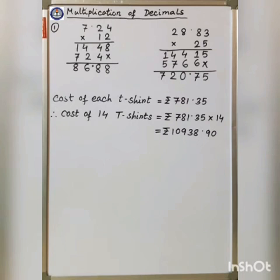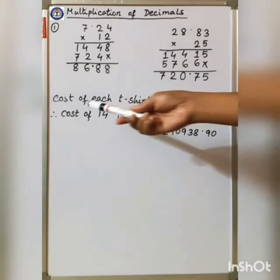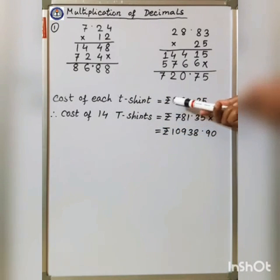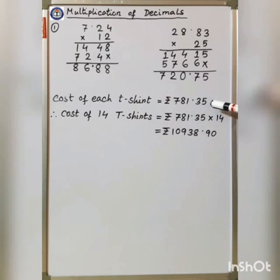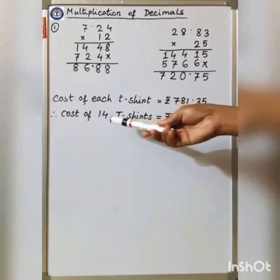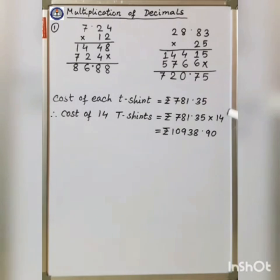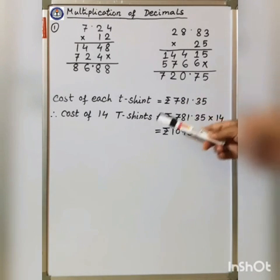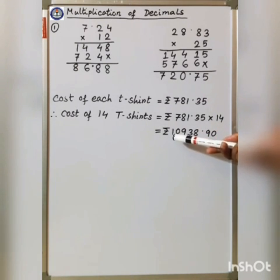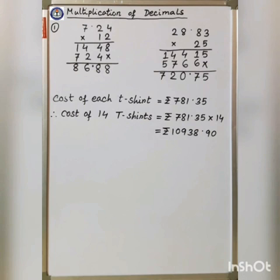Now one word problem. Rajesh has ordered 14 t-shirts for the salesman at his shop. If each t-shirt costs rupees 781.35, find the cost of all 14 t-shirts. Given: cost of each t-shirt is rupees 781.35. Therefore, cost of 14 t-shirts equals rupees 781.35 multiplied by 14. The answer is rupees 10,938.90. That's all for today. Thank you.